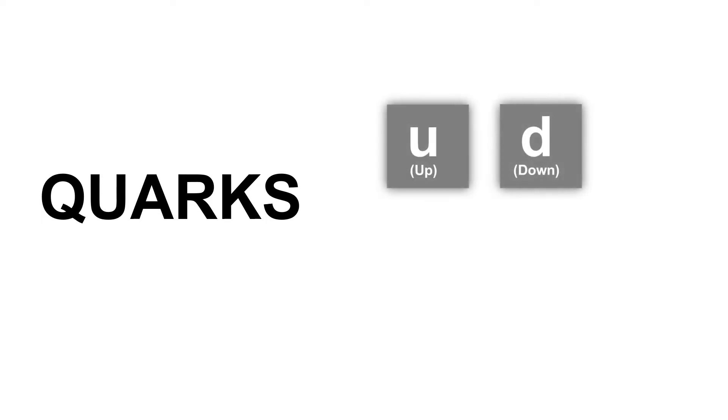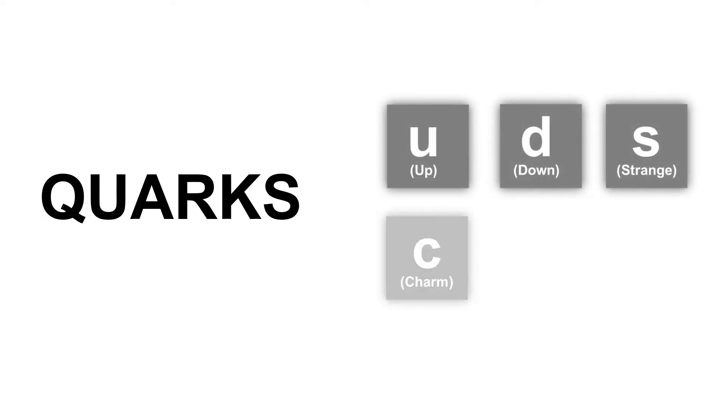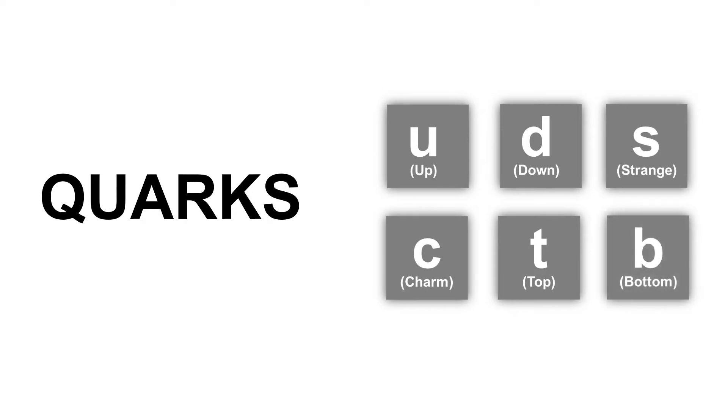Like leptons, so far a total of 6 quarks have been discovered. These are the up, down, strange, charm, top, and bottom quark.